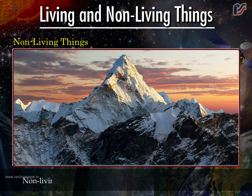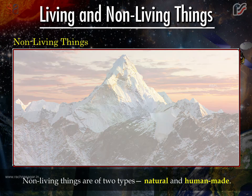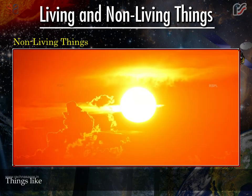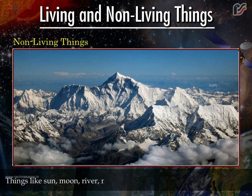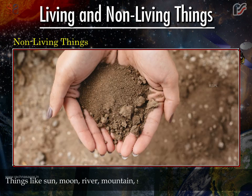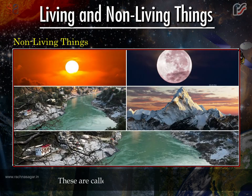Non-living things are of two types: natural and human-made. Things like sun, moon, river, mountain, soil, etc. are given to us by nature. These are called natural non-living things.